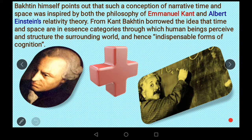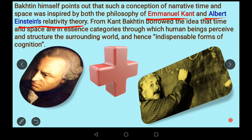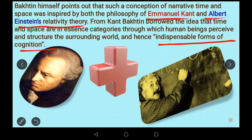From Kant, Bakhtin borrowed the idea that time and space are essentially categories through which human beings perceive and structure the surrounding world — abstract forms of cognition. How do we come to know the world? Through time and space. Bakhtin added Einstein's relativity to this framework.